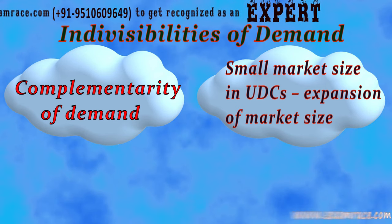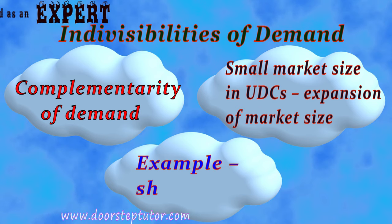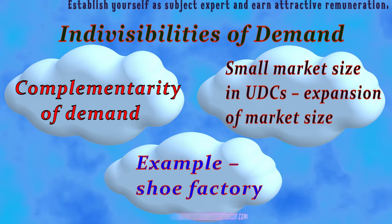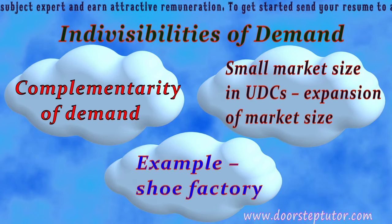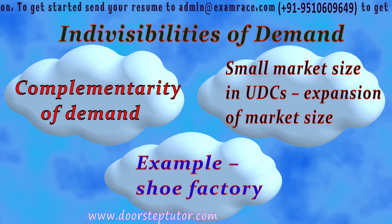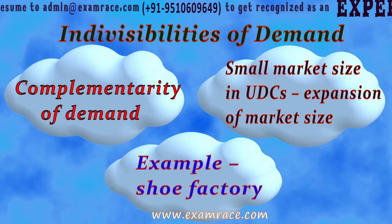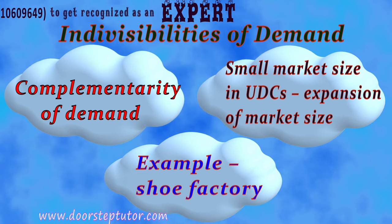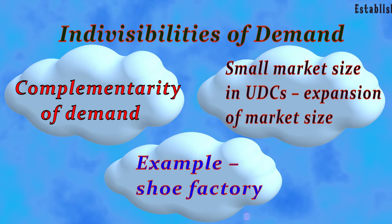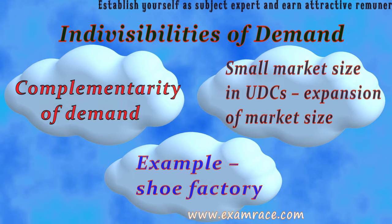This can be taken care of by expanding market size and simultaneously setting up interrelated industries. For example, suppose there are a hundred disguisedly unemployed workers in an underdeveloped country who are withdrawn and employed in a shoe factory. This would generate additional income. If they spend all of this newly received income on shoes, then an adequate market for the shoe industry would be ensured, and the industry would succeed and survive.